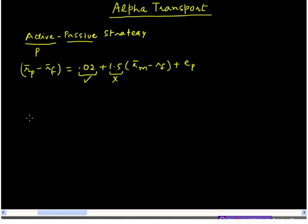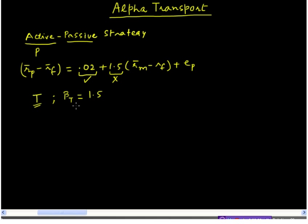This is where the passive part of our strategy kicks in. What you can do is construct a passive portfolio that tracks the market-sensitive part of portfolio P. Since this is going to be a tracking portfolio, let us call it portfolio T. This tracking portfolio tracks only the market-sensitive part of portfolio P, meaning we want the beta of portfolio T to be equal to 1.5.